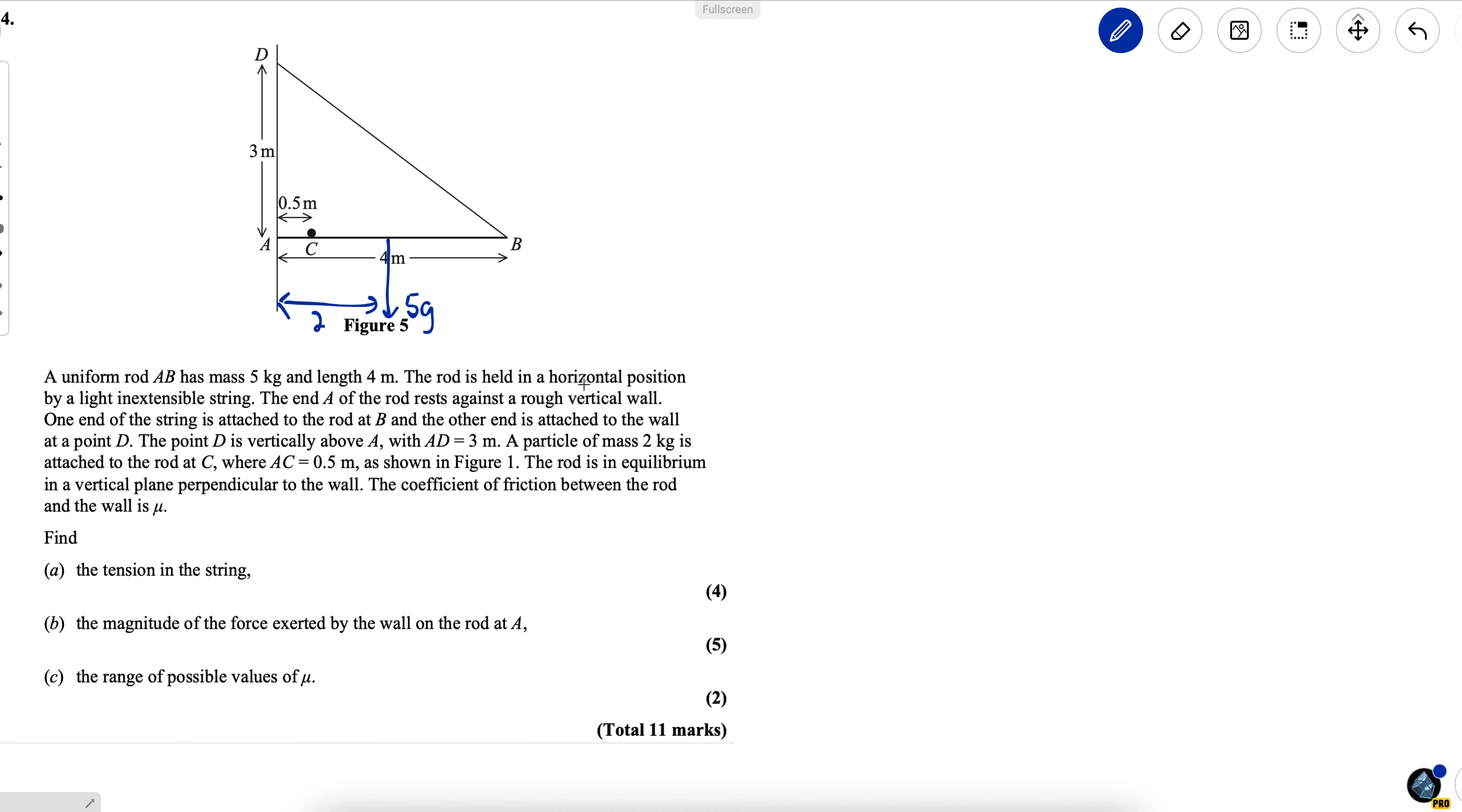The rod is held in a horizontal position by a light, inextensible string here. The end A of the rod rests against a rough vertical wall. If this wall is rough, then there's friction holding this rod in place. If the wall was smooth, this end of the rod would slip downwards so friction must be acting upwards in order to keep it in position.